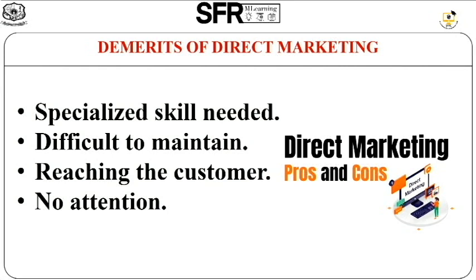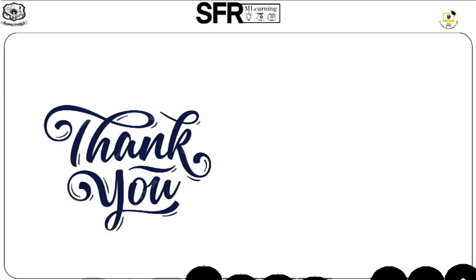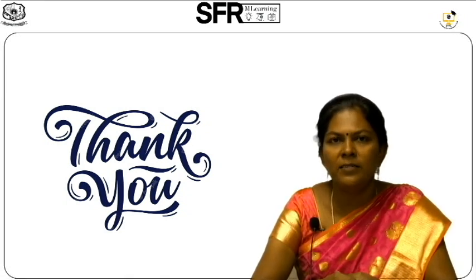Another demerit is that no attention from the receiver is possible in this case of marketing. In many cases, no attention from the receiver is observed — even though we mail them or send letters or use postal methods, the consumer has to pay attention to this marketing, and this also stands as a demerit. So for this video, we have seen about the characteristics, merits, and demerits of direct marketing. Thank you.